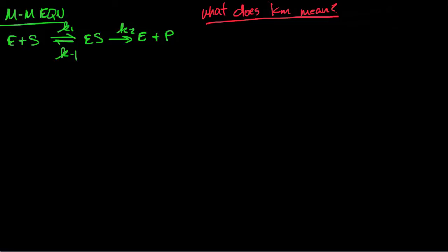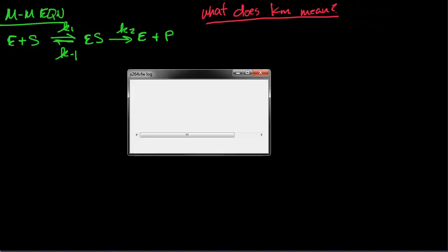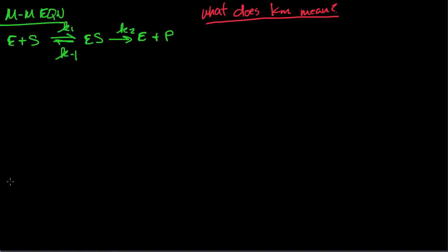All right, so for Michaelis-Menten kinetics, we're going to start with your basic reaction. You start off with the enzyme and the substrate, they're not bound, and they can get bound to form the ES complex. The ES complex can either get unbound via that reverse reaction, or it can form E plus P, which means your catalyzed reaction actually happened.